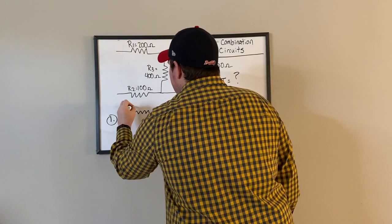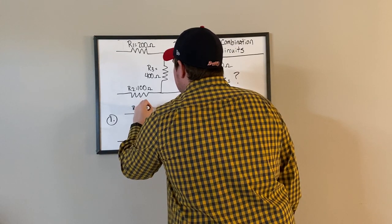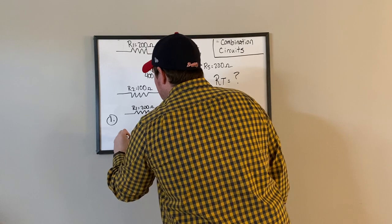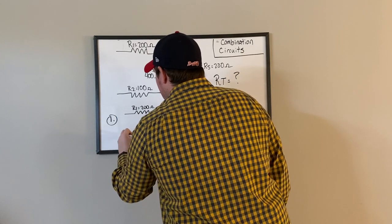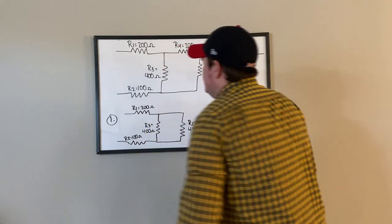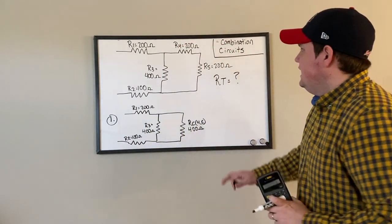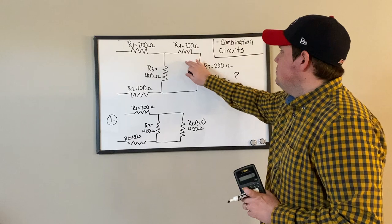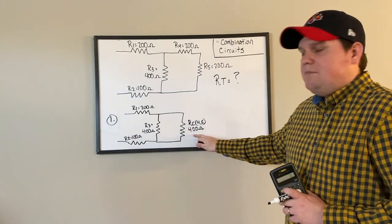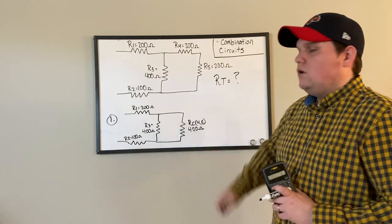R1 is 200 ohms, and R2 is 100 ohms. This is what redraw number one should look like — I combined R4 and R5 in series and renamed that RC4,5, which is 400 ohms.